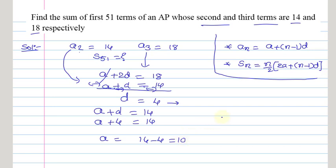Now in this AP, we got D as 4 and the first term as 10. Now we need to find out S51.